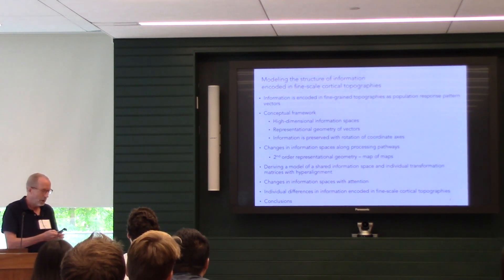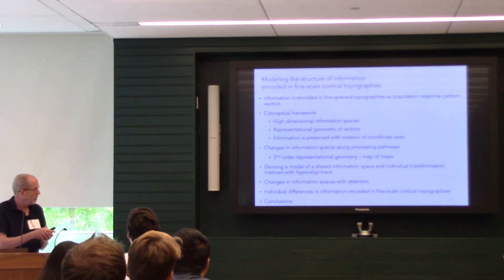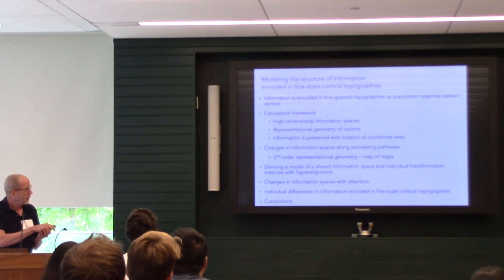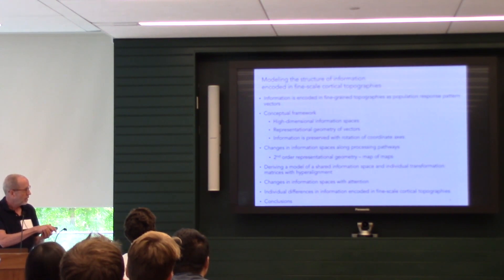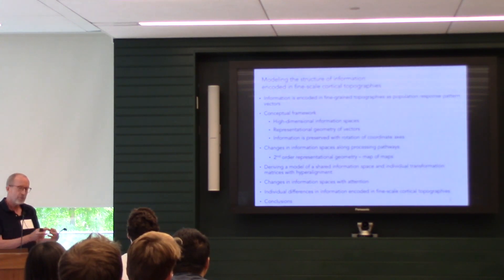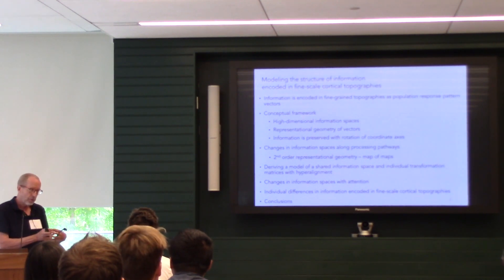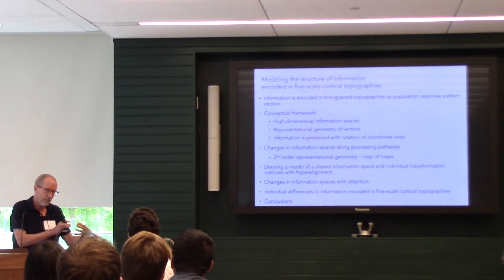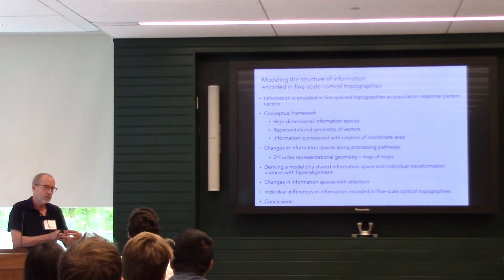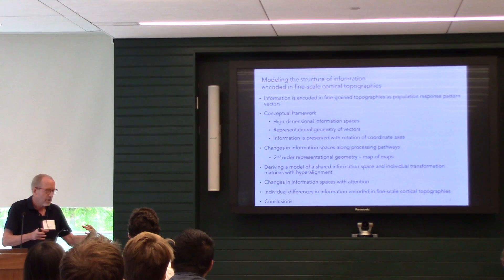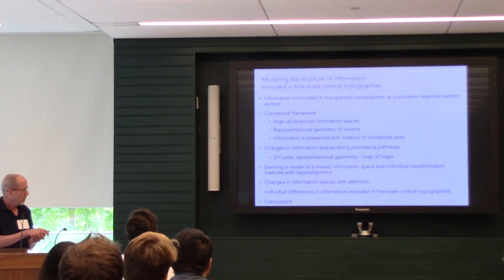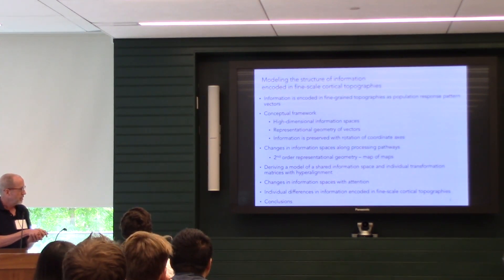I'm going to make the point that information embedded in the representational geometry — that's the distances between vectors for different percepts or concepts — is preserved with the rotation of the coordinate axes. I'll make a somewhat revolutionary point that may upset some of you. Then I'll talk about how information spaces change along processing pathways, and discuss this idea of second-order representational geometry, which is really a map of maps.